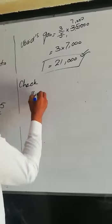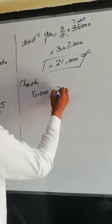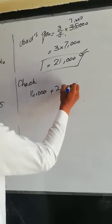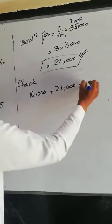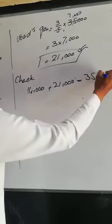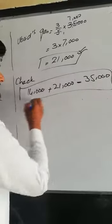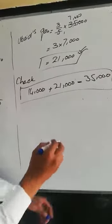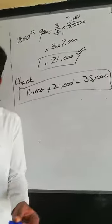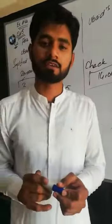To verify, we can add 14,000 plus 21,000, which equals 35,000 rupees. We have checked this for the convenience of confirming our answer. Thank you.